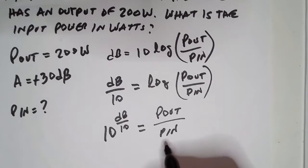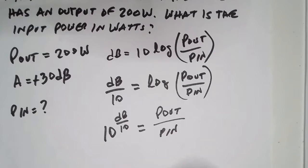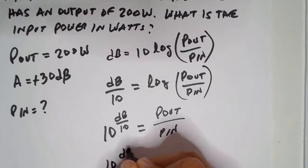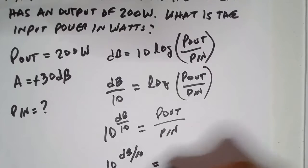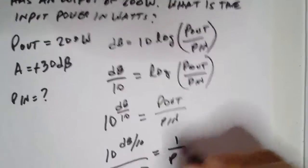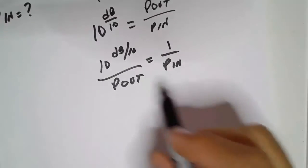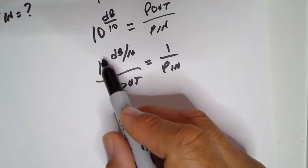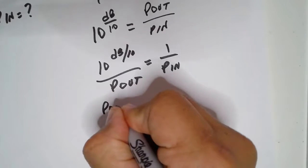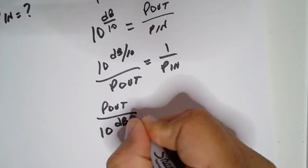Now we divide P out on both sides. That's 10 raised to dB divided by 10, over P out, equals one over P in. We take the inverse of each side, and that leaves us with this.